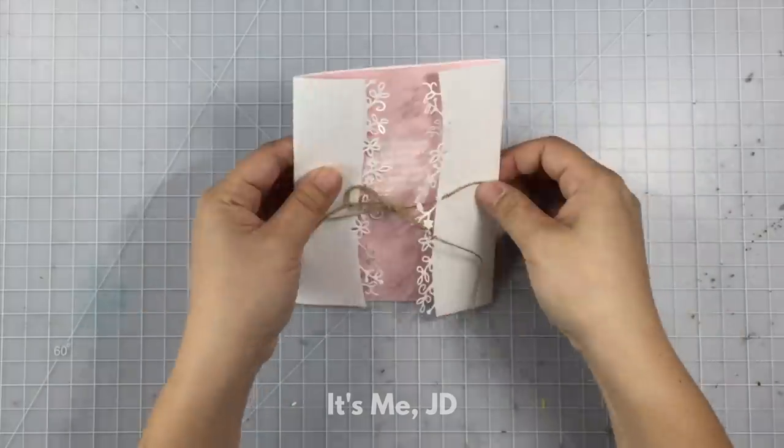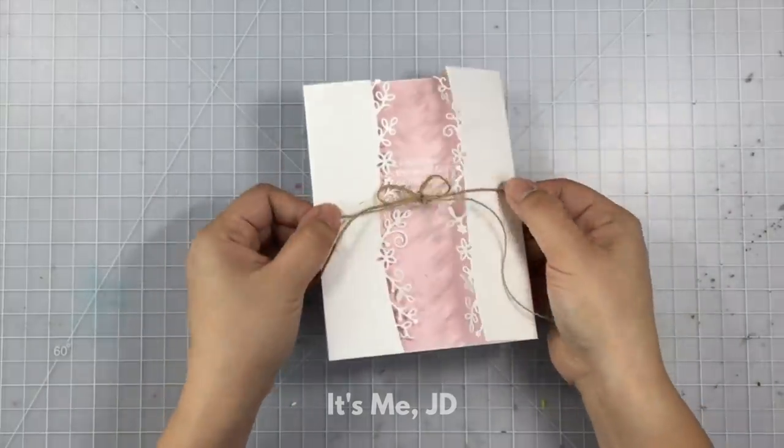Jute comes in very rustic colors or twine, baker's twine, comes in a variety of colors.